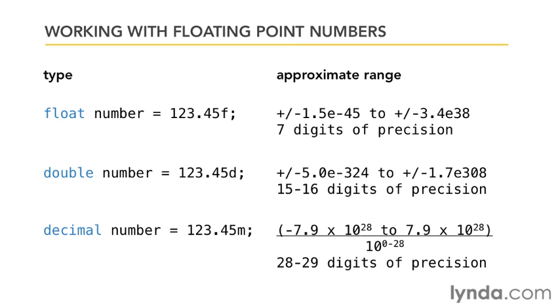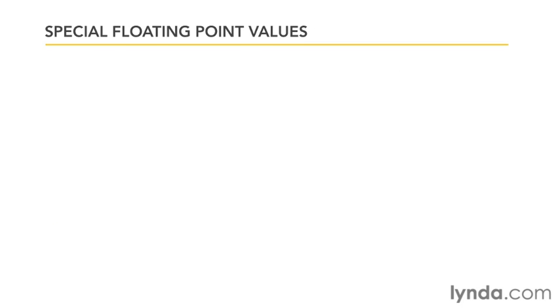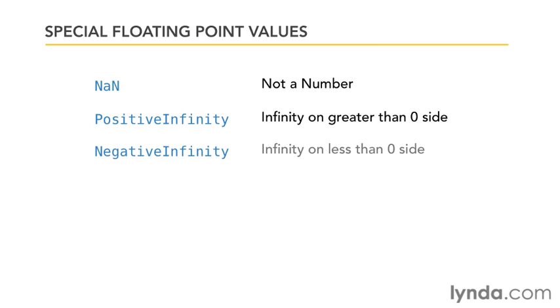In addition to these data types, there are some special floating point values that you should be aware of. The first of these is NaN, which means not a number. If a floating point variable gets into a state where you've either tried to divide by zero or some other kind of error happens, then the variable is set to NaN, which means not a number.